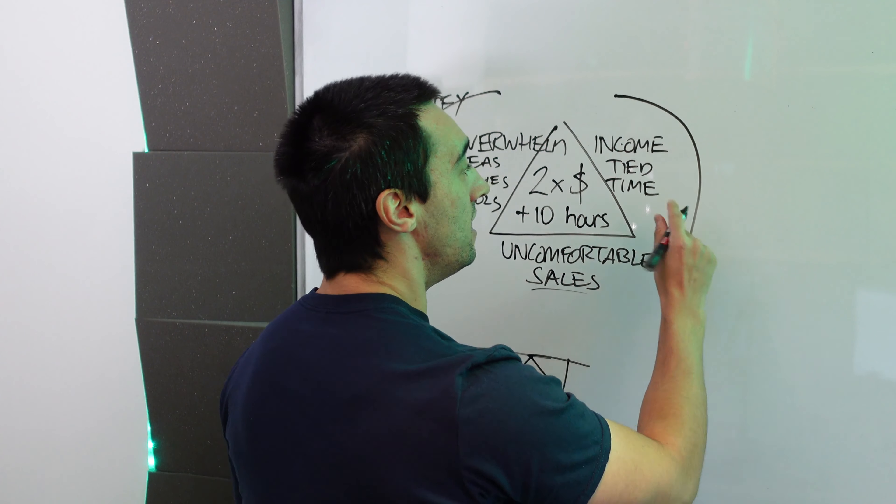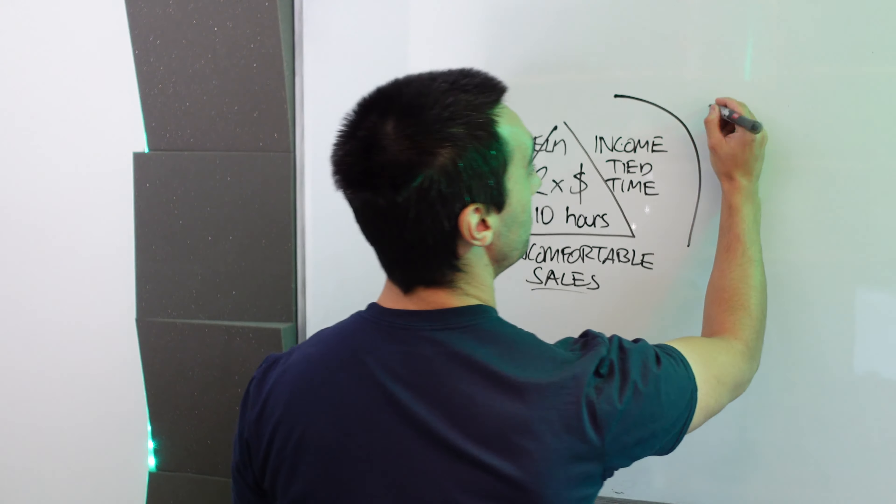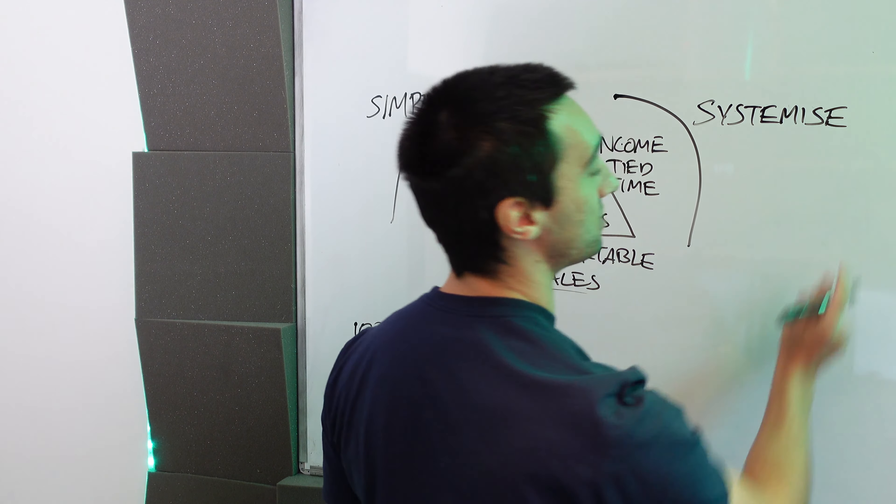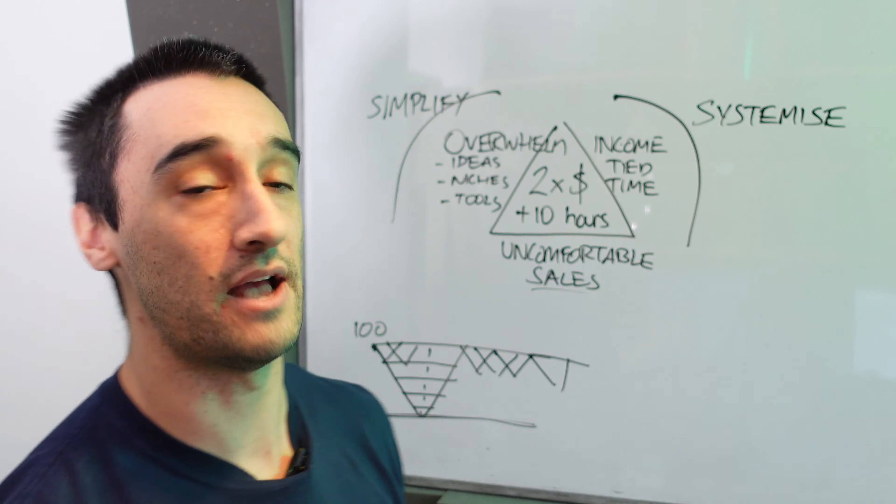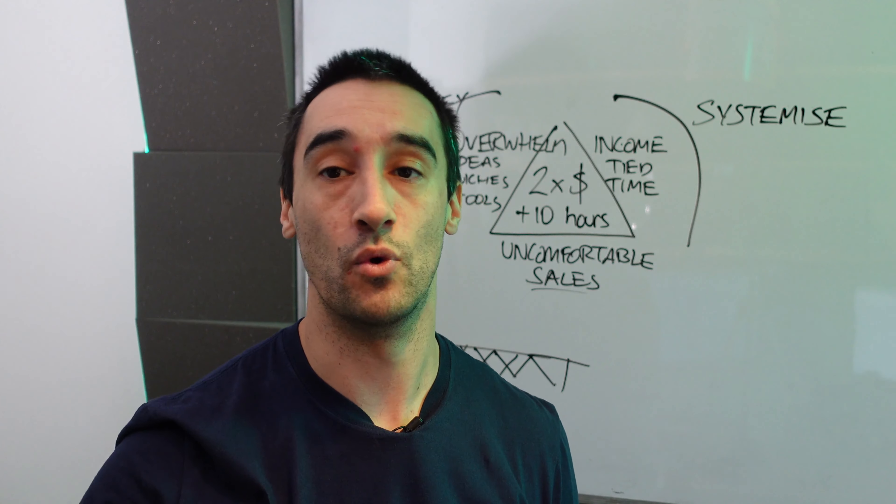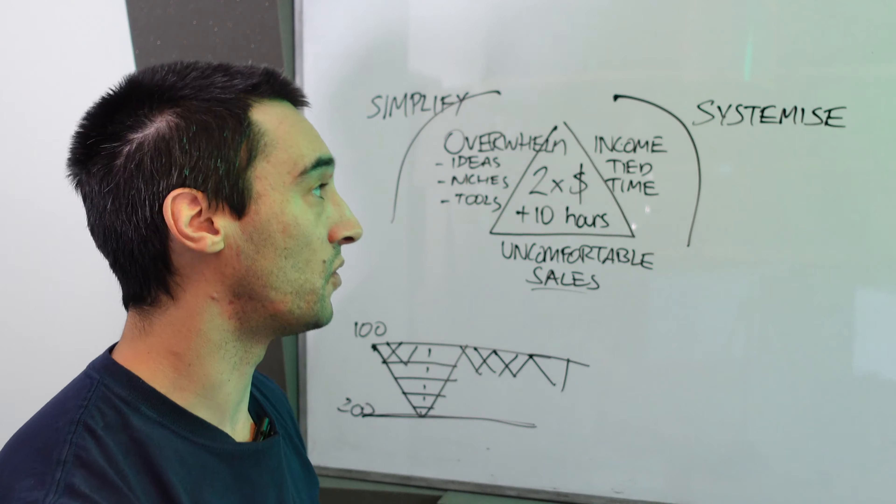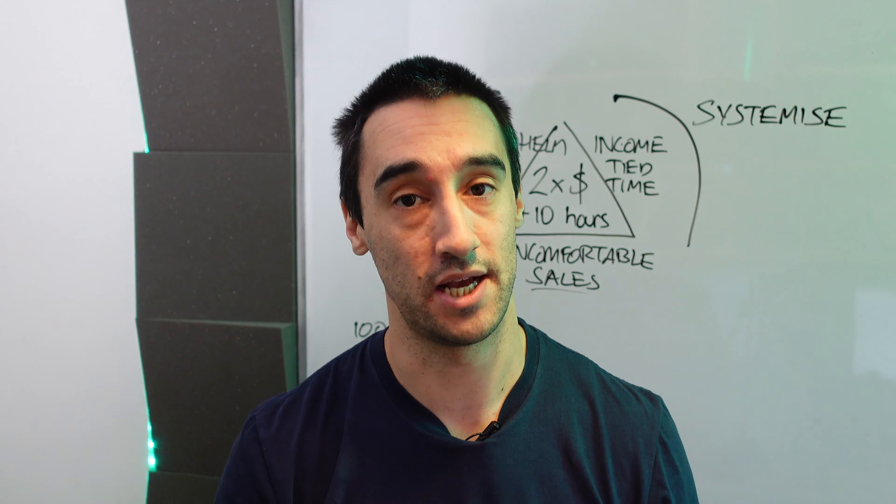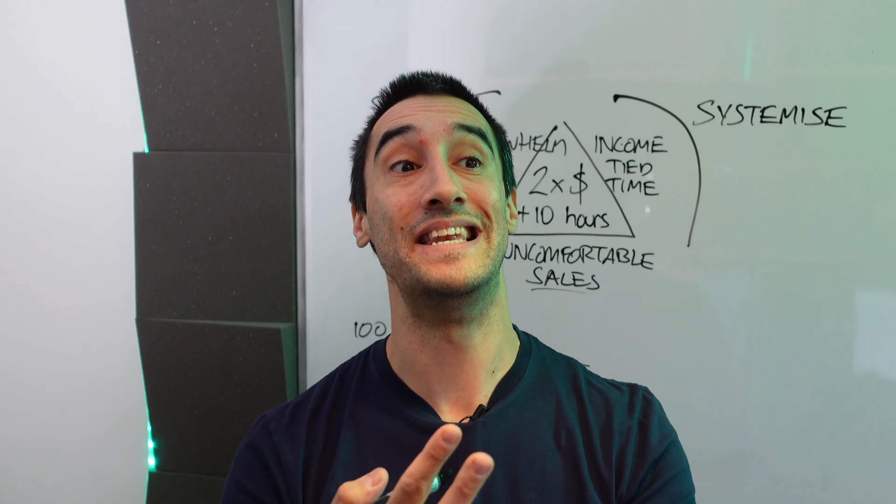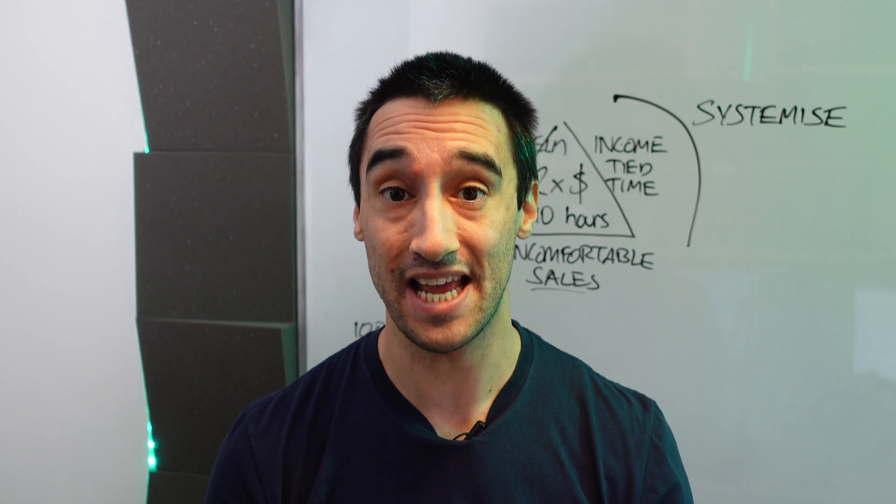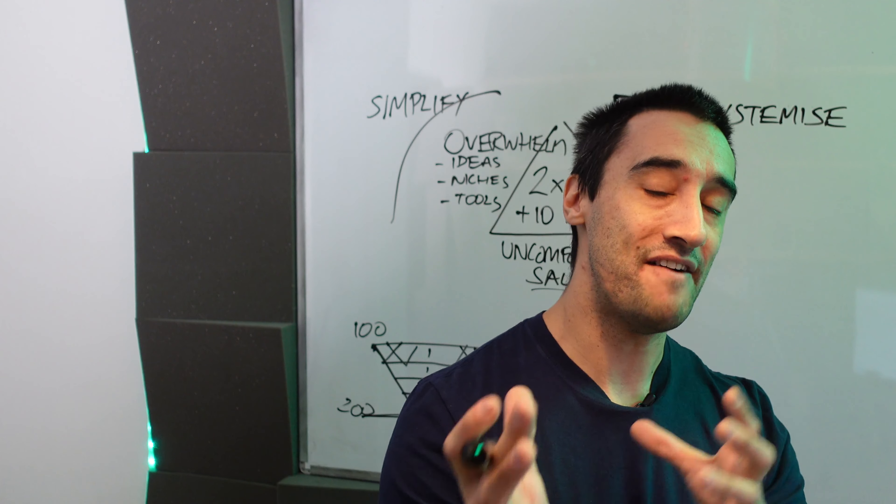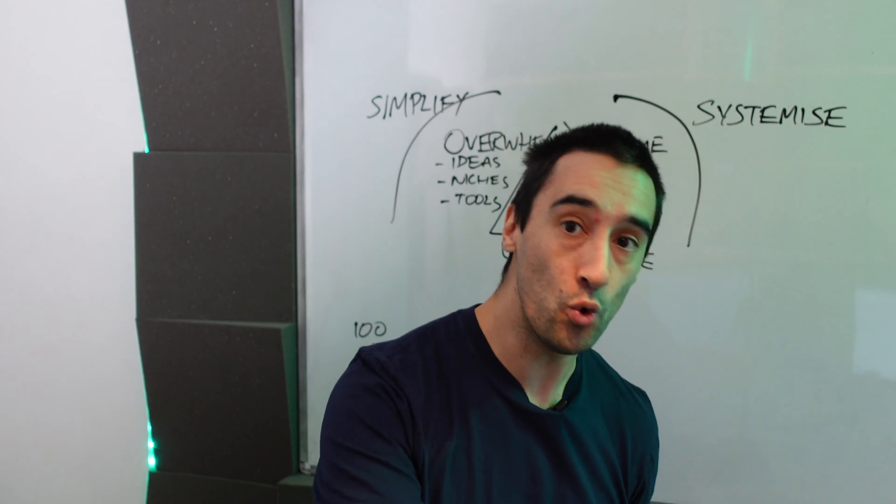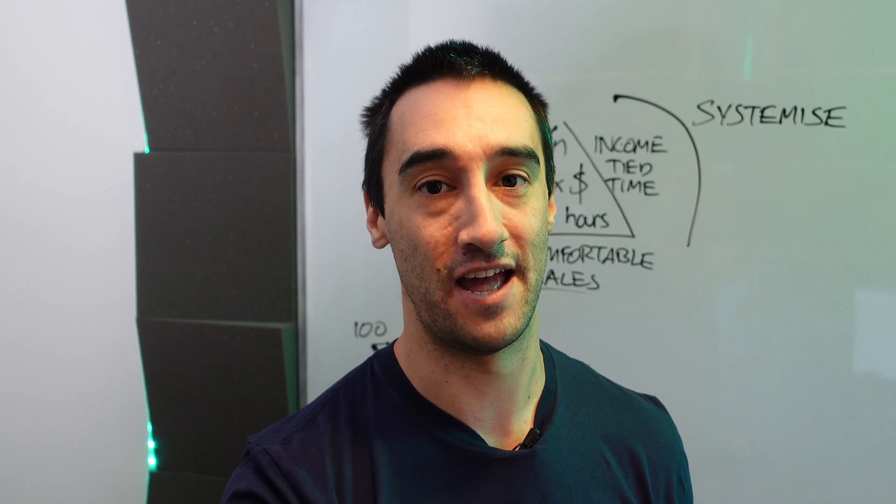The second thing, income tied to time. What we want to do is systemize. Now, I do not mean having 30,000 Zapier's apps running and 30,000 active campaign or high level automations going or anything like that. What I mean is what is the process for attracting new customers? What is the process we deliver to them? What journey do we take them on? What do we help them with? If you have a niche and a specific problem that you're solving for that niche, all you should be doing is trying to solve that problem for that niche. That's it.